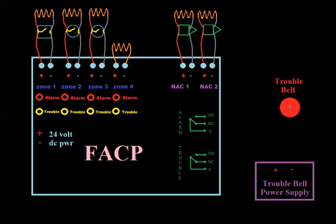Welcome back. In the last video, we discussed an alarm relay and how it can be used to close doors, close fire doors, and a number of other things. I just want to do a real quick example of the trouble relay. It does basically the same thing. One application you'll find, particularly in the city of Chicago, in nursing homes and daycares and things like that, is a trouble bell.